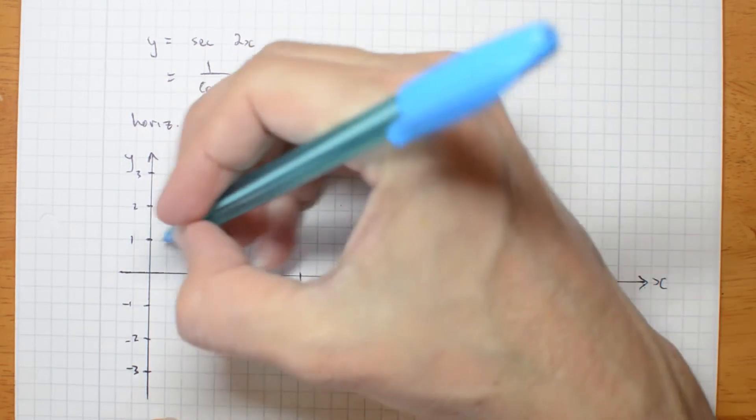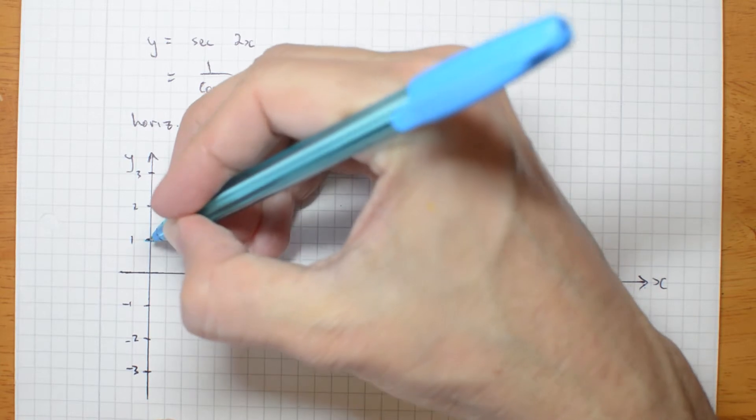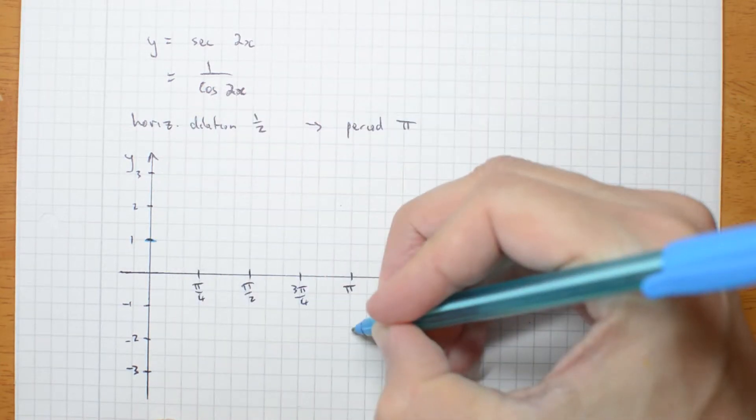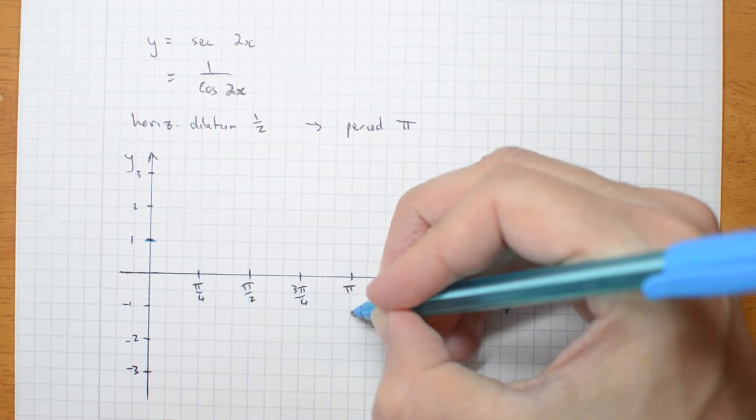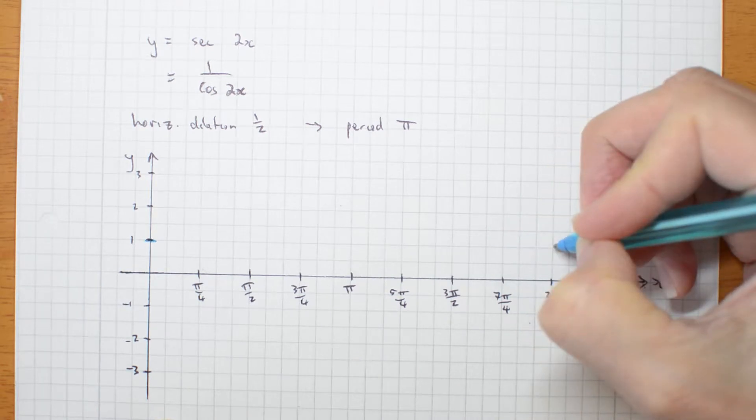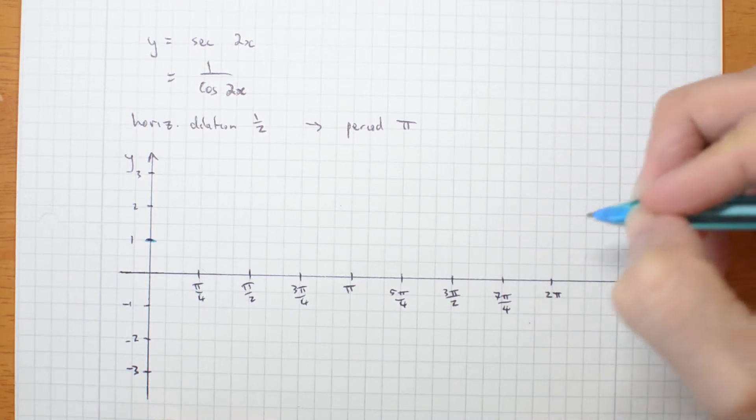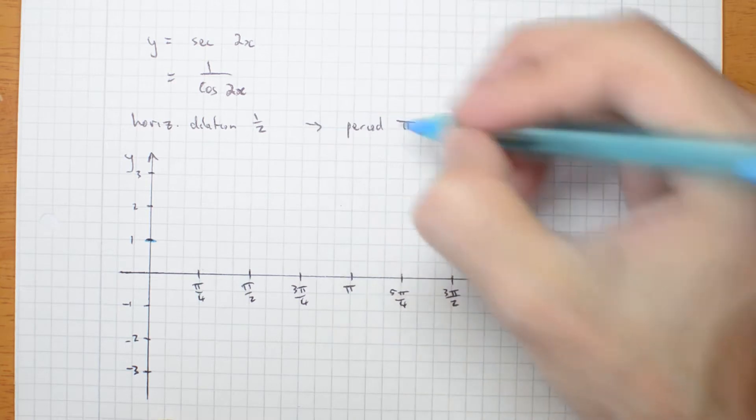So cos normally starts here, and normally it would go down to here, and then back up to here. But I've actually got a half dilation, period is π.